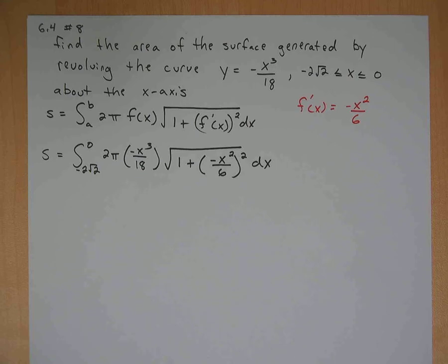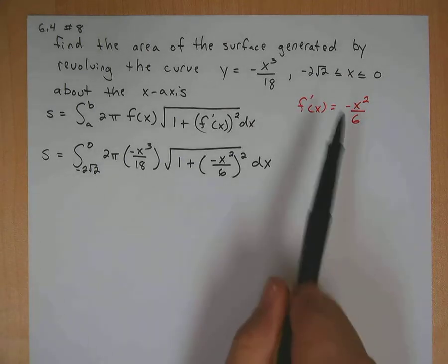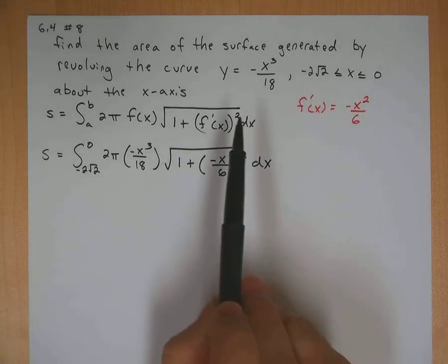Okay, on this problem we're going to find the area of the surface generated by revolving the curve y equals negative x cubed over 18. We have our limits, negative 2 square root 2 to 0 about the x-axis.